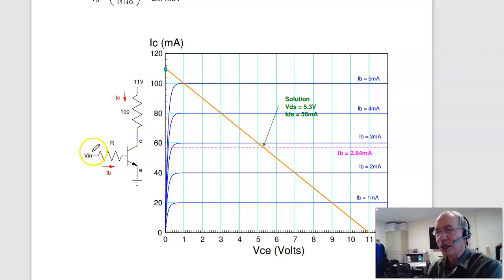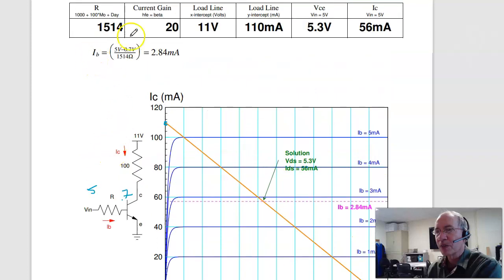The current IB, when VIN is 5 volts, I have 5 minus 0.7 over R. For my resistance, I get 2.84 milliamps. Where that intersects your load line is your operating point, right here. 5.3 volts, 56 milliamps.